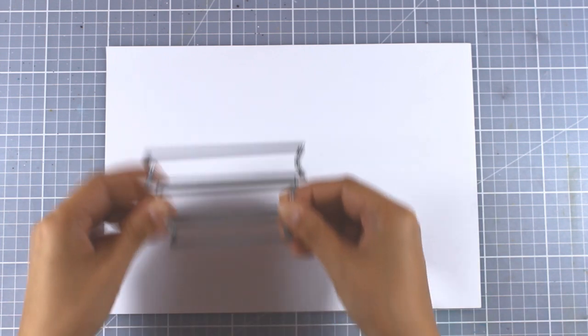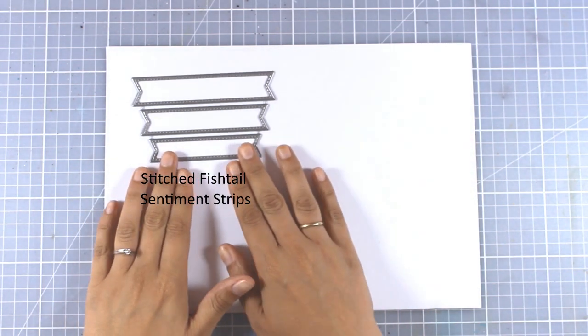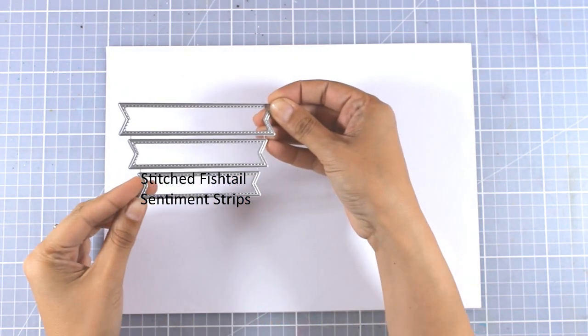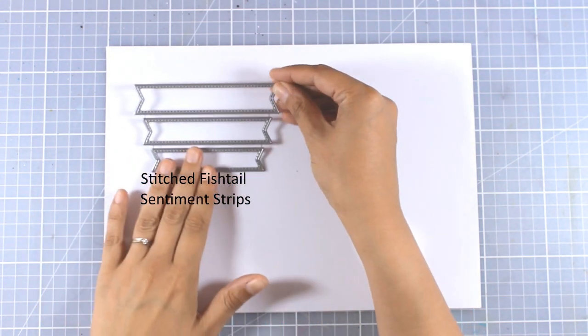Now let's take a quick look at all the dynamic dies that have been released for this month. These are Stitched Labels with fishtails on each end, and I really love them. I love everything that has stitching all around.